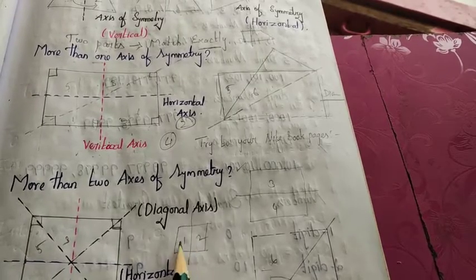Third question: draw the line or axis of symmetry of the following figures. In the first figure, we drop one horizontal line. In the second figure, we drop 4 lines — vertical, horizontal, and two diagonal lines. In the third figure, we drop a horizontal line. In the fourth figure, we drop vertical and horizontal lines to match the square.